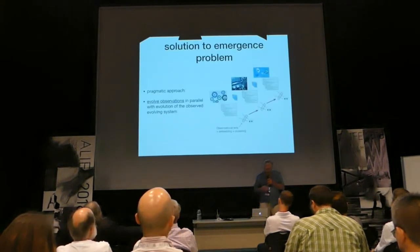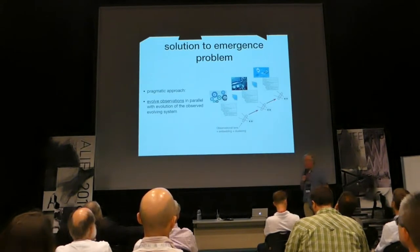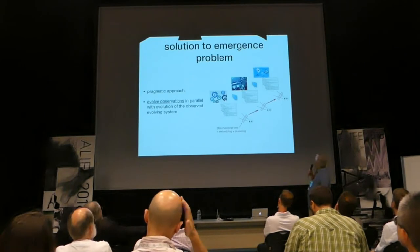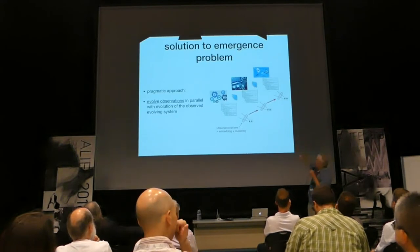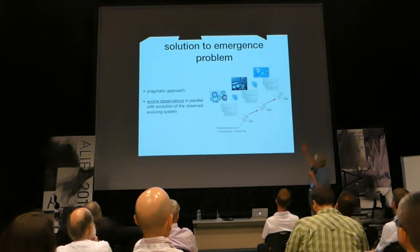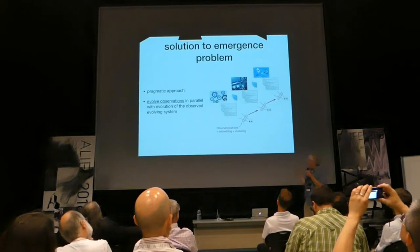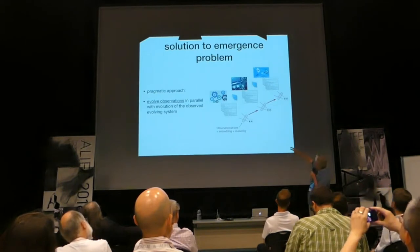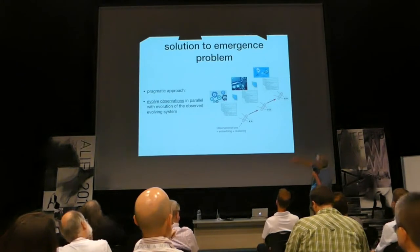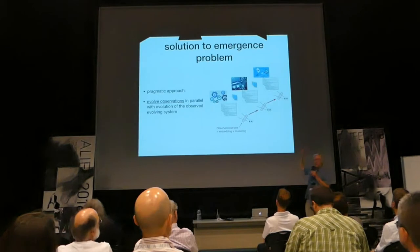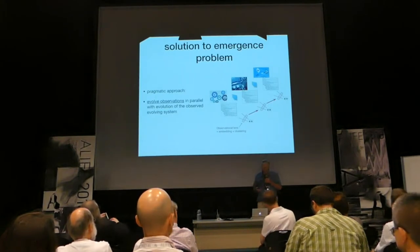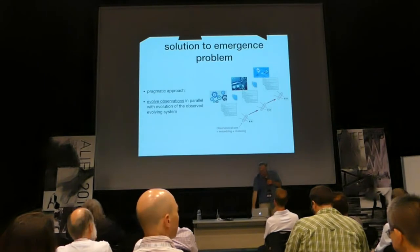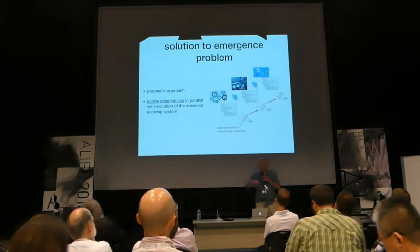This is a pragmatic solution to the emergence problem. We have technology as this kind of evolving system producing a constant stream of innovations. The way we're proposing to deal with that generically is to have an observational system that's evolving in parallel with the system you're observing. The evolution of the observations is necessary to solve the emergence problem — you don't know what to look for before it's been innovated.